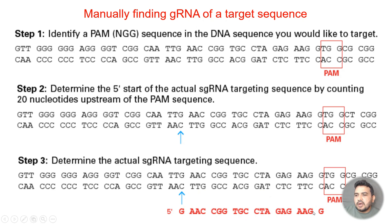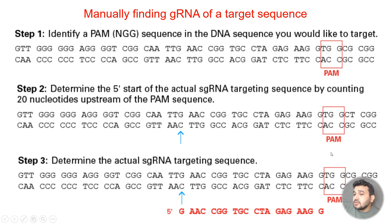That would actually be our guide RNA sequence. Make sure that in the final guide RNA sequence, the PAM sequence is not included. The PAM sequence is important for Cas9 recognition, but it is not finally included in the guide RNA sequence itself. Let me show you a few more examples from databases.